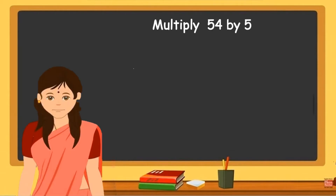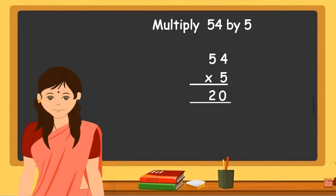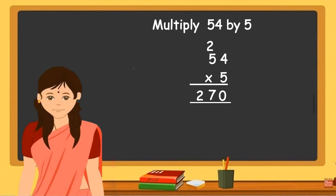Another sum: multiply 54 by 5. Arrange the multiplicand and the multiplier — 54 into 5 — and start multiplying. First, 5 into 4 is equal to 20. Leave 0 in the units place and carry over 2, writing it above 5 in the tens place. Then multiply 5 into 5, which is equal to 25, plus the carry over 2 equals 27. Write 7 in the tens place and 2 in the hundreds place. The answer or the product is 270.